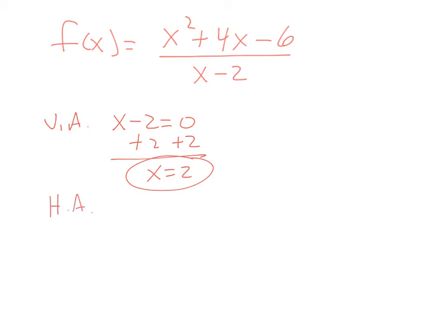Horizontal asymptotes, we look at the lead term and realize this is top heavy. And a top heavy, there is no horizontal asymptote because it's turned into a slant asymptote. So slant asymptotes, we will long divide. What times x gives x squared? That would be x. x times x is x squared.